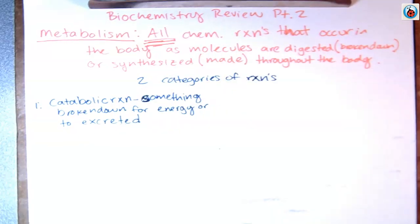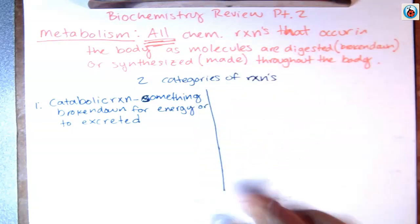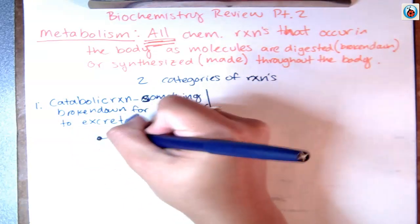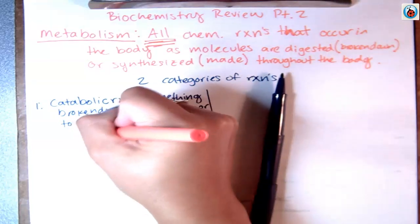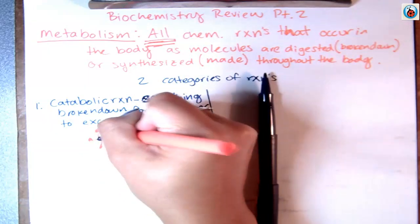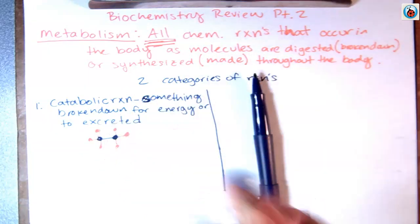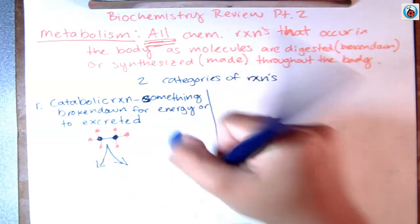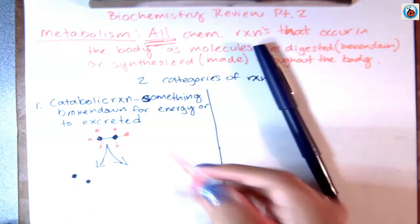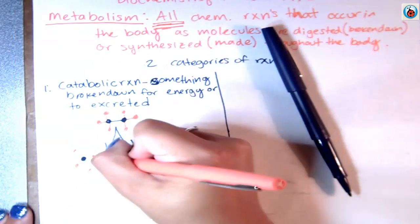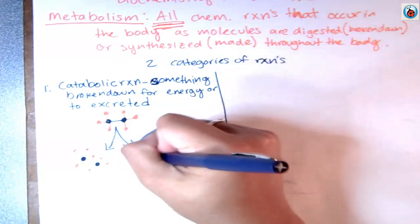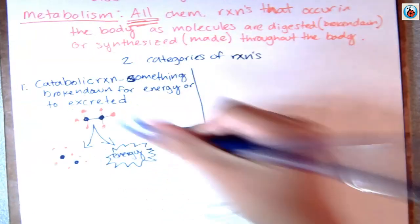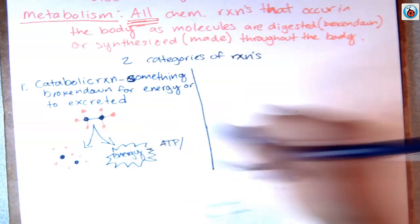We're going to draw a little picture to help remember that. Here we have some molecule made of different elements, and a catabolic reaction is going to break something down so we end up with the individual pieces as well as energy. That energy can be in the form of ATP or heat.